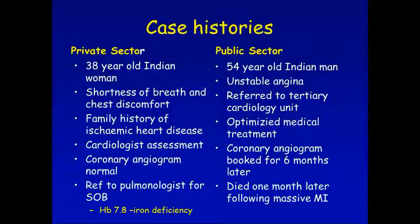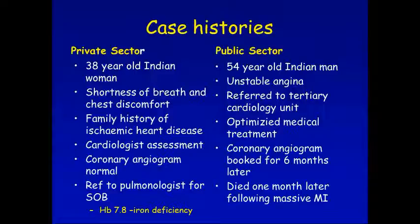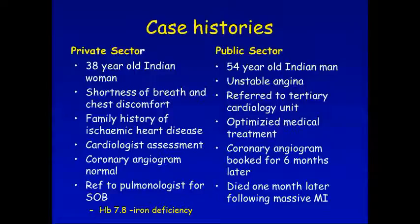They said he had unstable angina, put him on treatment, and he needed a coronary angiogram. But there was one problem: in the whole of KwaZulu-Natal — a population of 10 million people, the most populous province in South Africa, the richest country on the continent — we only have one angiogram facility. They told him their appointments are full and they would see him in six months. The patient may need revascularization, whether a stent or CABG. Unfortunately, the patient had a massive heart attack and died one month later. The patient who needed the coronary angiogram couldn't get it because of lack of resources, and the other patient who didn't need it got it because of too many resources.